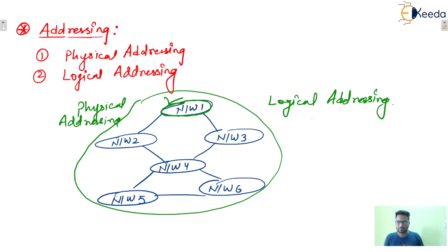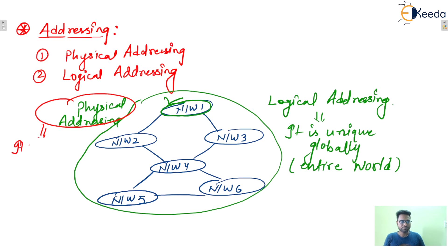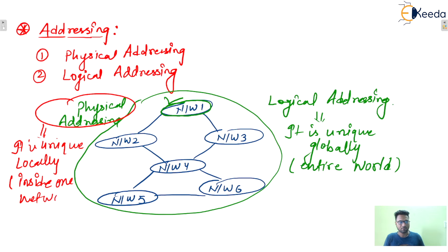Logical addressing means it is unique globally — globally means in the entire world. In any network, no two logical addresses must be the same. Physical addressing means it is unique locally, inside one network. Logical addressing means it is unique globally.